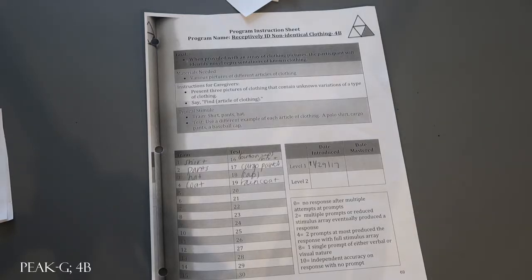But that is just a quick material sample for PEAK Generalization: Receptively ID Non-Identical Clothing 4B.